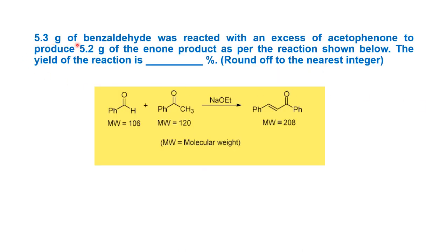This question is taken from IIT JAM 2019 question paper and will be useful for people taking UGTRB or QT examinations. The question is: 5.3 grams of benzaldehyde reacted with an excess of acetophenone to produce 5.2 grams of enone product as per the reaction shown below. The yield of the reaction is to be found.